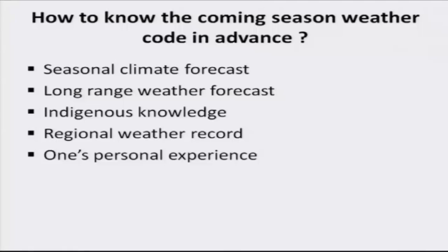How do we know the coming season's weather code in advance? Farm management decisions — weather-based decisions — have to be taken based on the anticipated weather change. The probability level may differ from 60 to 100 percent; for seasonal scale, the probability would be around 60 percent. One source is seasonal climate forecast, which is provided in Australia and also in India, especially in Tamil Nadu.